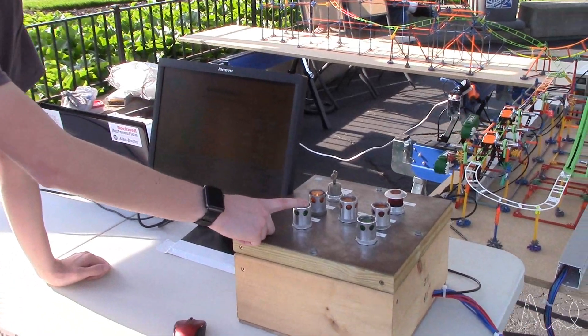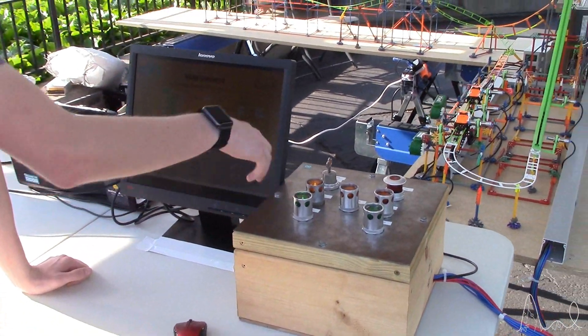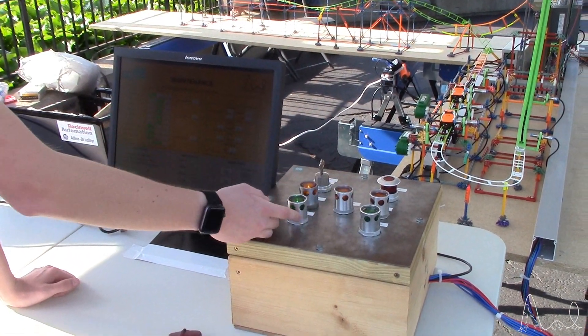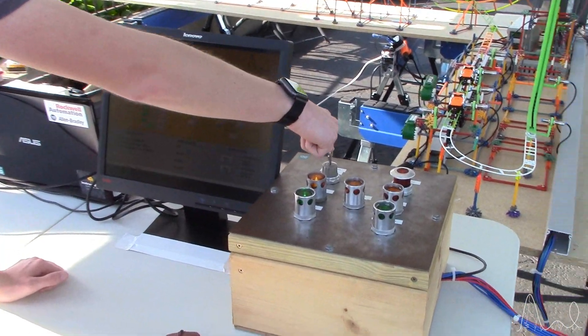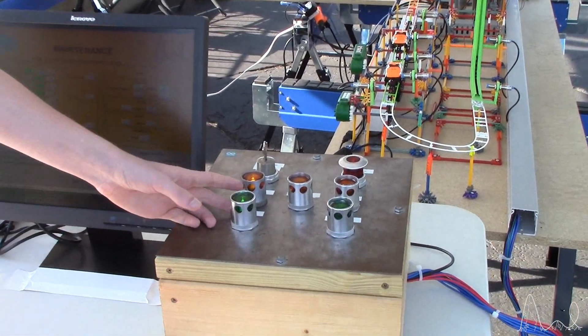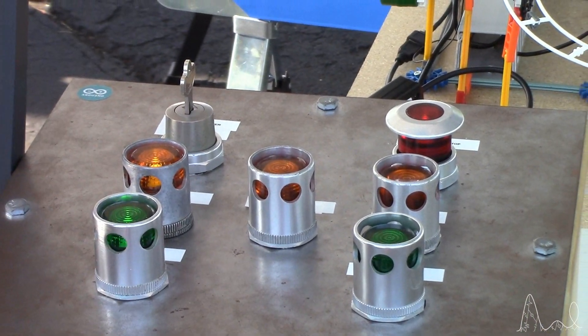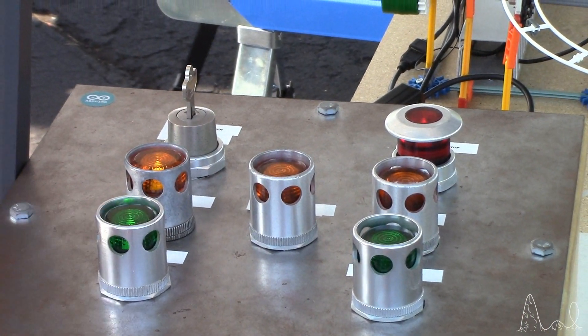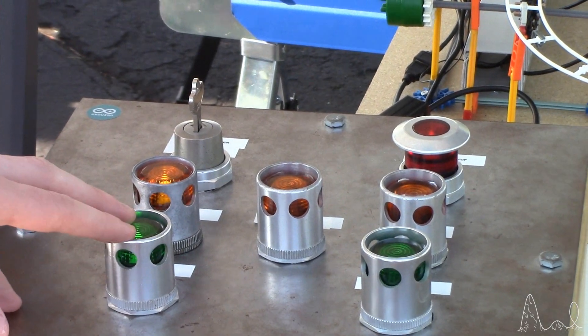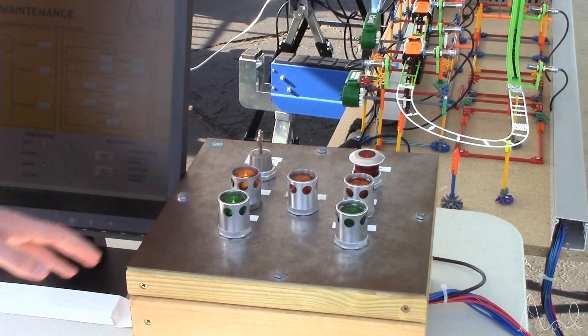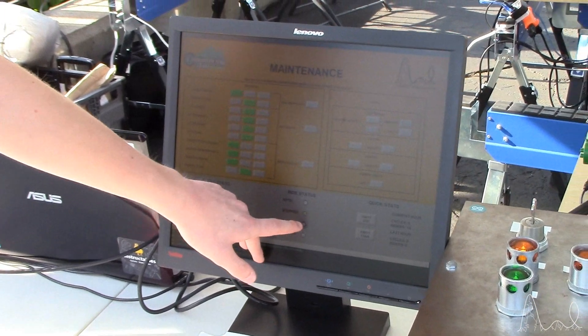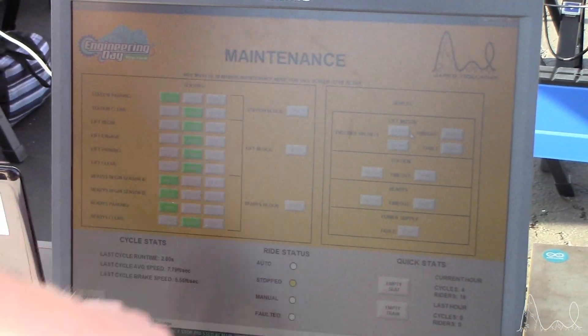So on the panel, this is what it looks like when it comes online after you switch the control power on. You'll get the ride stop on and the e-stop pulled up, and your auto start will be flashing. If you look on the HMI real quick, you can see that the ride status is currently stopped.